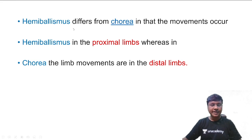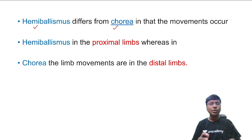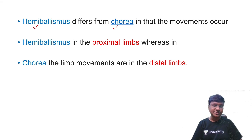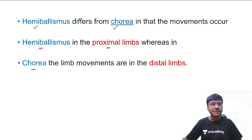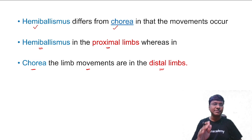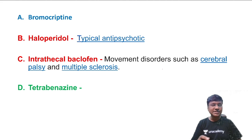The difference between hemibalismus and chorea: both are involuntary movements, but in hemibalismus the involuntary movement is mainly present in the proximal limb, whereas in chorea the abnormal movement is present in the distal part of the limb. This is the very important distinguishing feature.